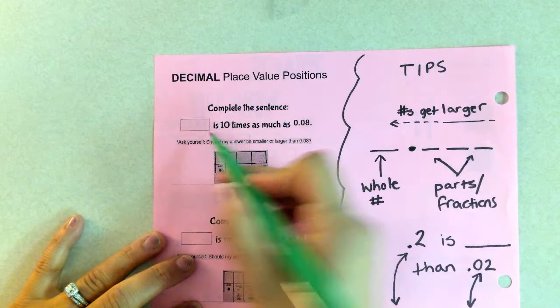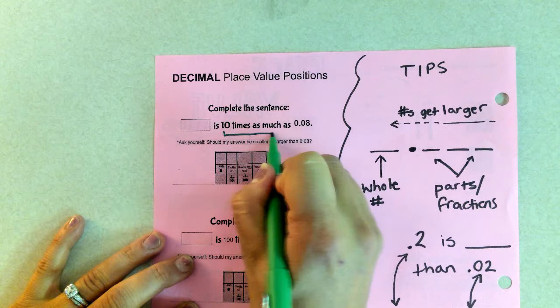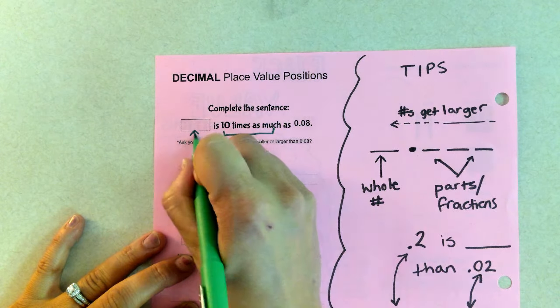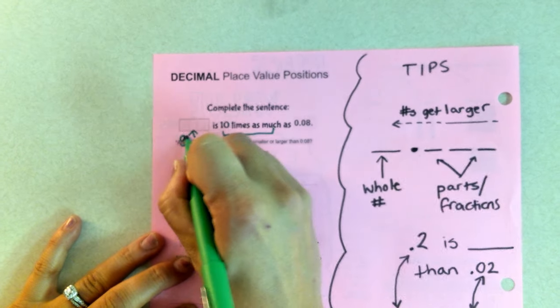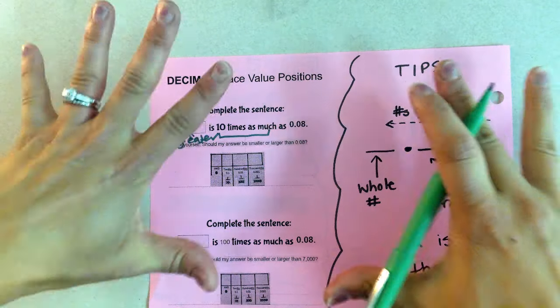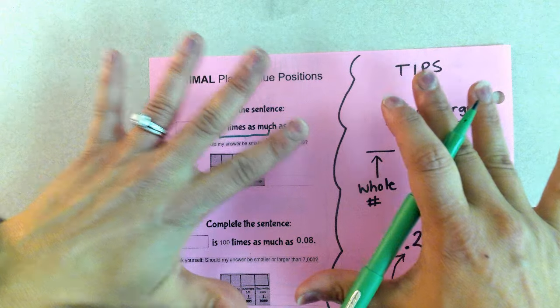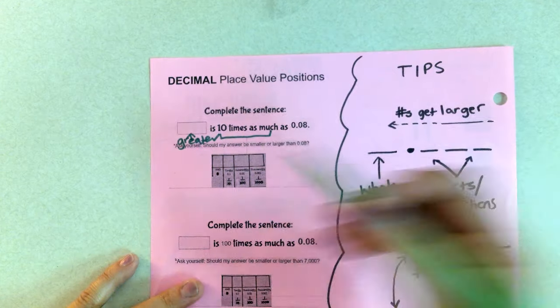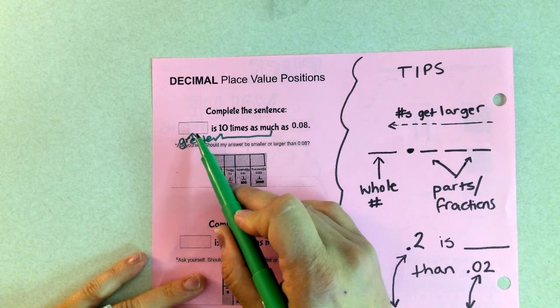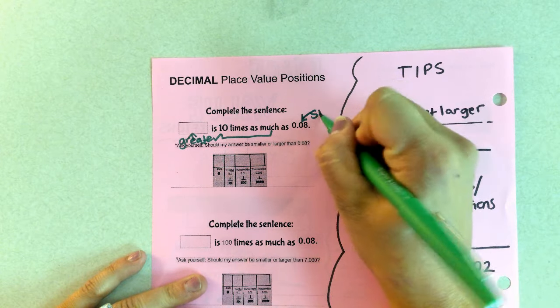It says blank is 10 times as much. If something is 10 times as much, that means it's going to be greater, it's bigger. It's like saying I'm taking something and boom, 10 times as much, 100 times as much, 1,000 times as much. It's getting bigger. So that means think of it like a scale. If this is greater, then this number must be smaller.